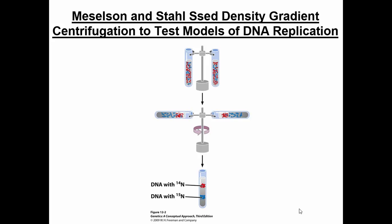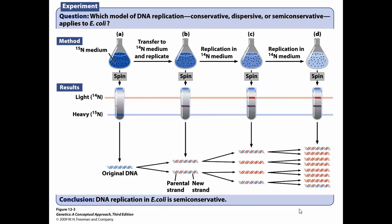They started with original DNA growing in a bacterial broth labeled with N15 nitrogen. If they isolated the DNA, put it in a tube, and centrifuged it, all of the DNA would sediment down to the heavy nitrogen band. No light nitrogen band was visible because no N14 had been used yet in the experiment.